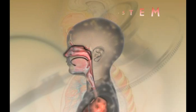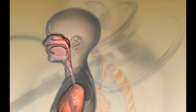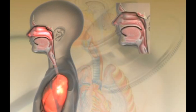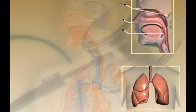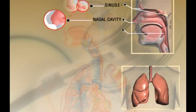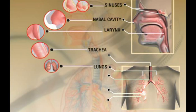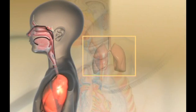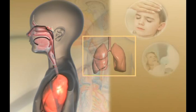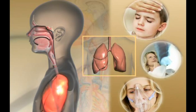Let us first understand the respiratory system. The respiratory system may be divided into two sections, the upper and the lower. The upper respiratory tract includes the nose, nasal cavity, sinuses, and larynx, while the lower respiratory tract consists of the trachea, lungs made up of airways termed as bronchi and bronchioles, which end into air sacs called alveoli. Now that we have a clear picture of our lungs, let us understand the various respiratory infections that threaten our children, acute as well as chronic.